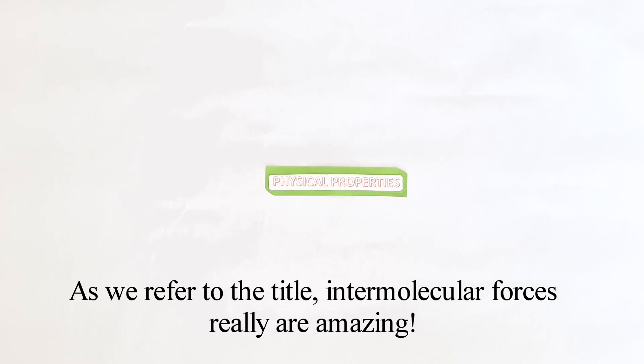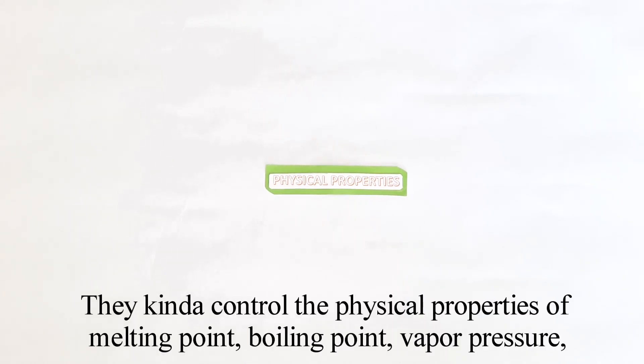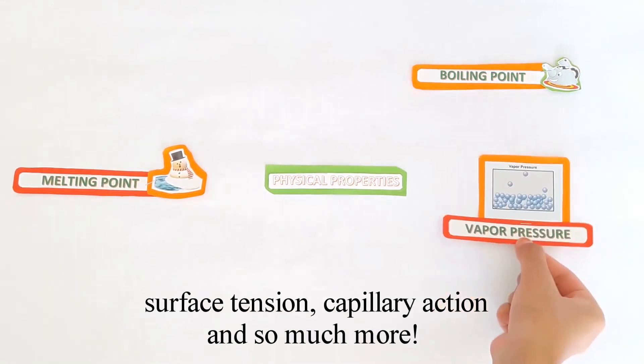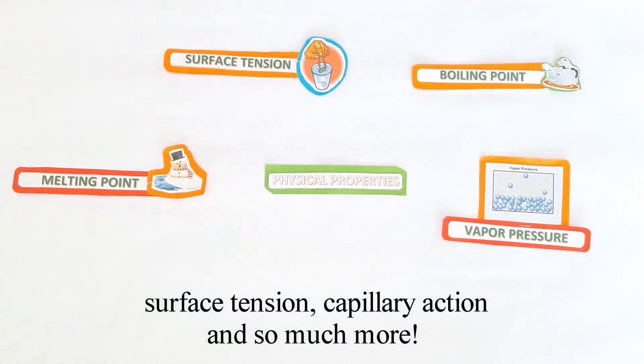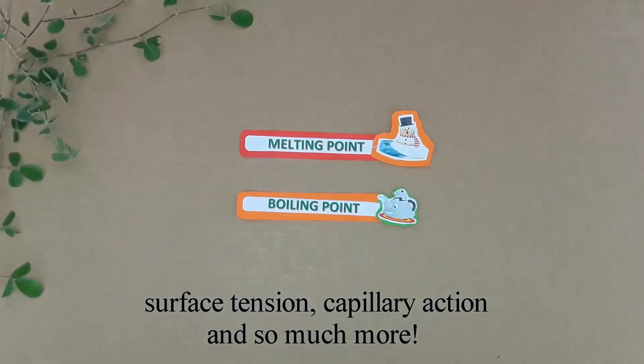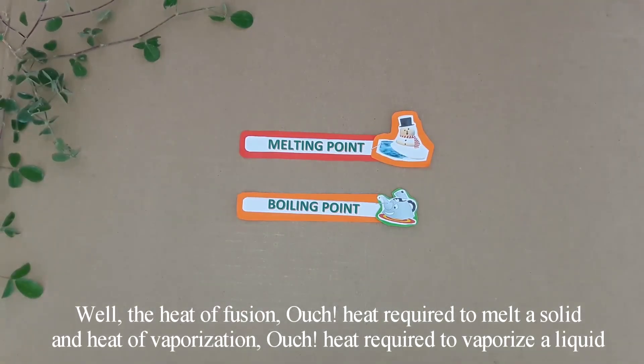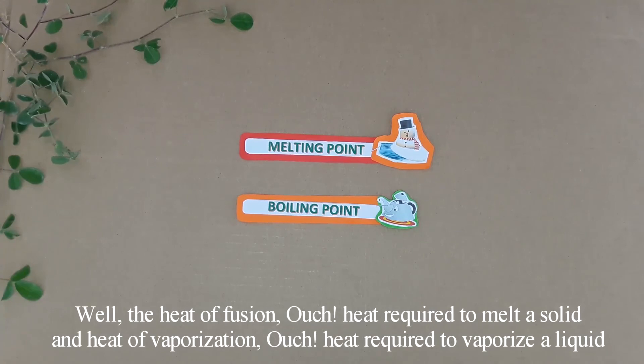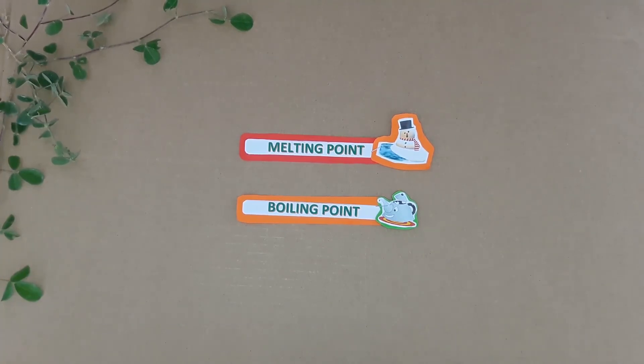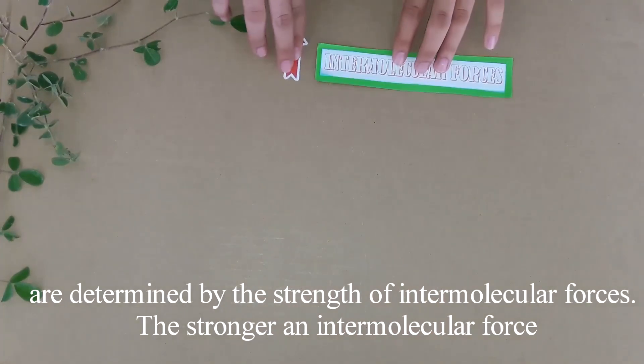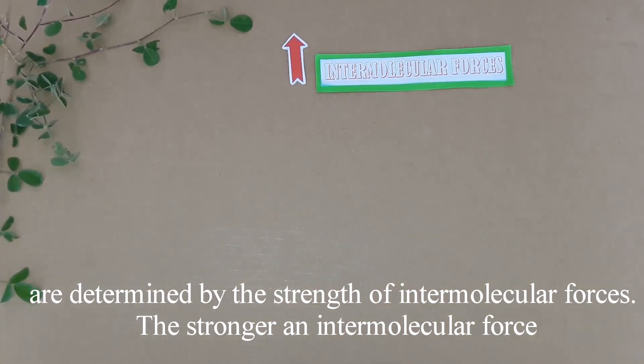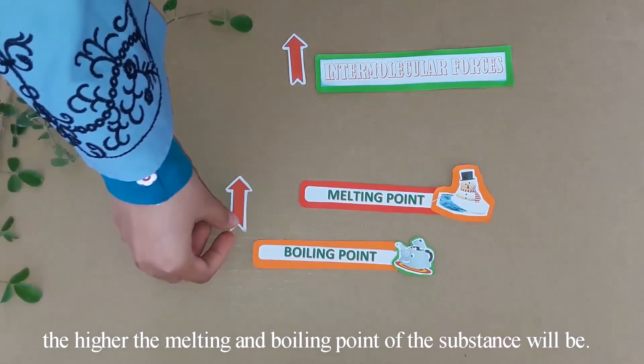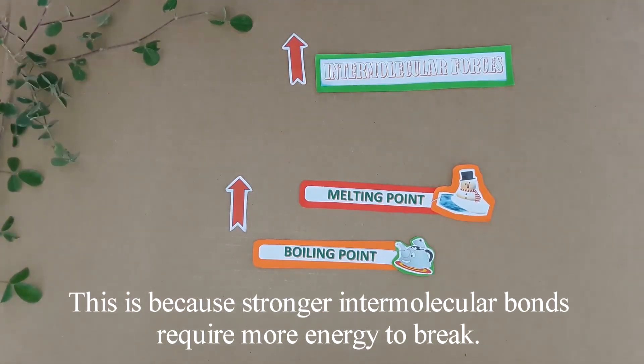As we refer to the title, intermolecular forces really are amazing. They kind of control the physical properties of melting point, boiling point, vapor pressure, surface tension, capillary action, and so much more. Well, the heat of fusion or the heat required to melt a solid and the heat of vaporization or the heat required to vaporize a liquid are determined by the strength of intermolecular forces. The stronger an intermolecular force, the higher the melting and boiling point of the substance will be. This is because stronger intermolecular bonds require more energy to break.